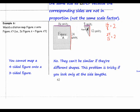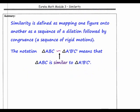Let's continue to the summary. Similarity is defined as mapping one figure onto another as a sequence of a dilation followed by a congruence, which is a sequence of rigid motions. The notation — this symbol — means 'is similar.' So we say triangle ABC is similar to triangle A prime, B prime, C prime. That concludes Lesson 8.